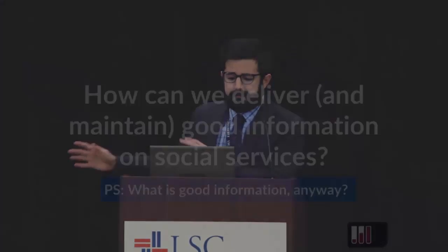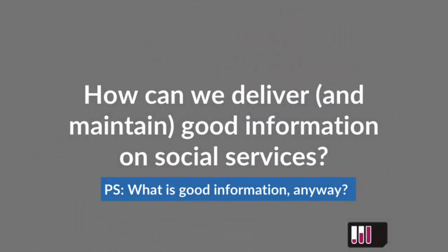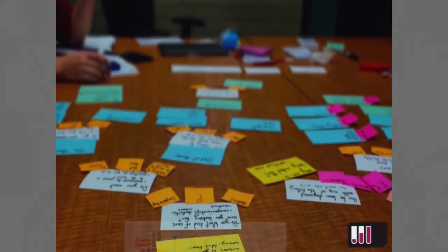We ended up refactoring the challenge into something like this: how can librarians deliver and maintain good information on social services? And while we're on the subject, what is good information anyway? It's really a human problem — an information architecture problem. How can we take the universe of available social services and categorize, parse, and filter them into questions to enable somebody with zero knowledge to navigate the system?